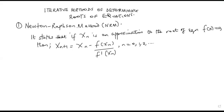These were two men who combined to come up with this algorithm. It states that if xₙ is an approximation to the root of the equation f(xₙ) = 0, then xₙ₊₁, which is our next approximation, would be equal to xₙ minus f(xₙ) over the derivative f'(xₙ), where n is 0, 1, 2, and so on. This formula is what we call the Newton-Raphson iterative formula for approximating the root of f(x) = 0.